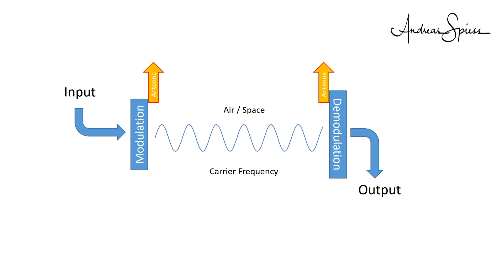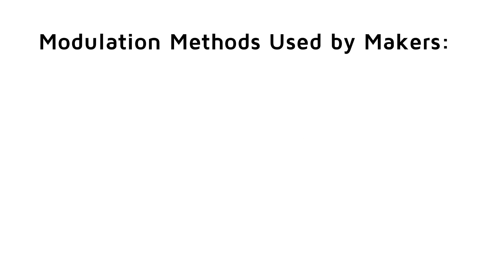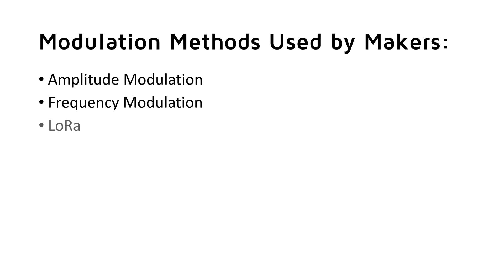We continue at the task of modulating the carrier frequency with our baseband signal. There are many ways of doing it, all with advantages and disadvantages. For makers, three modulation principles are relevant: amplitude modulation, frequency modulation, and LoRa, which is a combined method — we will not cover it today. Amplitude modulation, or AM, is the simplest way and has been used since the beginning of radio.